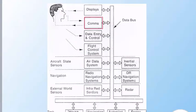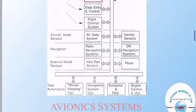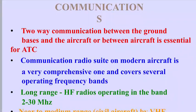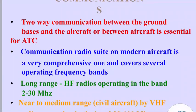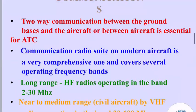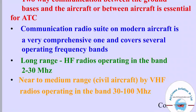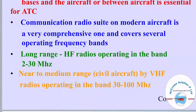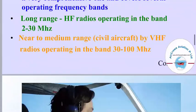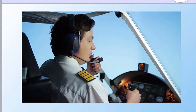After displays, we will discuss the communication system. Two-way communication between ground bases and aircraft, or between aircraft, is essential for air traffic control. The communication radio suite on modern aircraft is very comprehensive and covers several operating frequency bands. Long range is covered by HF radios operating in the 2 to 30 MHz band, and near to medium range for civil aircraft by VHF radios operating in the 30 to 100 MHz band. A pilot uses a headphone and mic set to communicate with an air traffic controller.